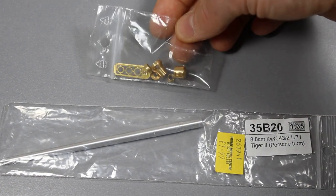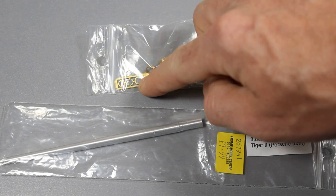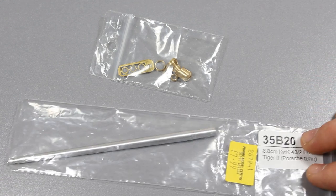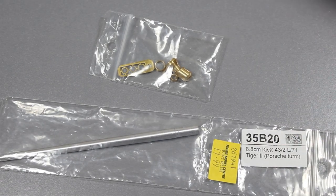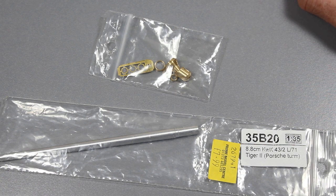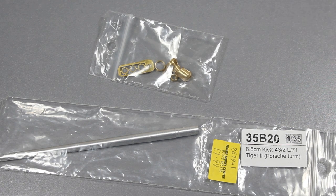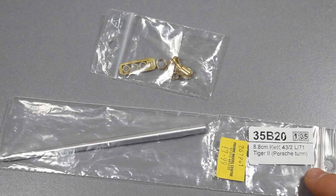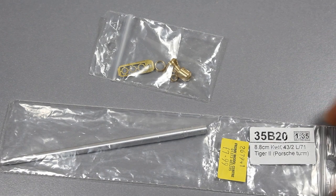So there we've got the metal muzzle brake, a small piece of photo etch for the rest of the parts, and there is the entire barrel. This is for the 8.8 centimeter KWK 43 II, or the L71 88 millimeter gun on the Tiger II. Some of the larger things, I think the Jagdpanther had this as well.